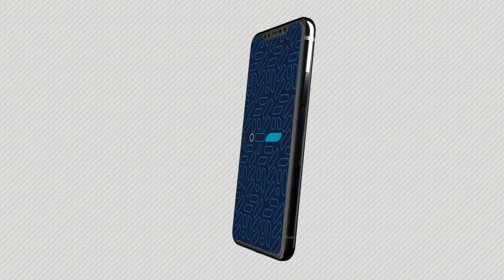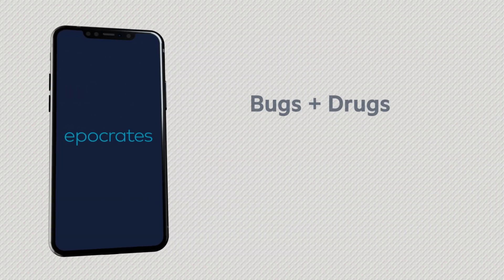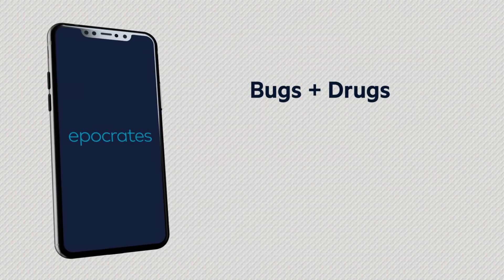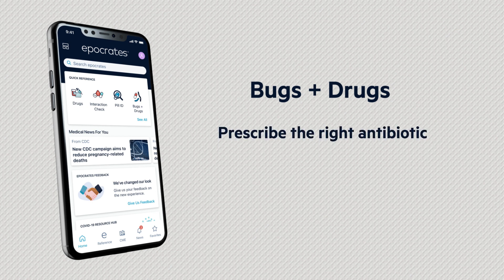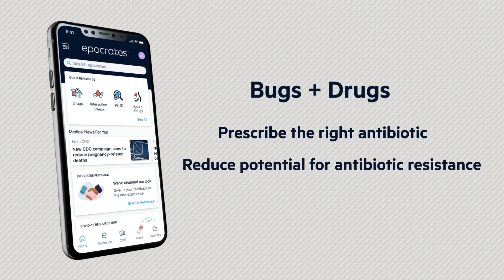The only tool of its kind, Hippocrates Bugs and Drugs enables you to make more accurate point-of-care prescribing decisions to treat bacterial infections. With data-backed localized antibiotic resistance patterns and drug recommendations, Bugs and Drugs helps you prescribe the right antibiotic for your patients while reducing the potential for creating antibiotic resistance.